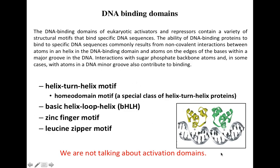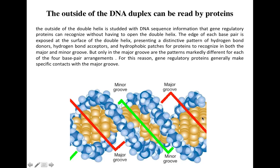Today we are going to talk about some general aspects of DNA binding domains. Looking at this slide, you can see a double helical structure of the DNA. The sugar-phosphate backbone is indicated in blue, and inside you can see the nucleotides. This is the minor groove and this is the major groove of the DNA. Regulatory proteins generally interact with the nucleotides in the major groove, though they can also make additional bonds with the sugar-phosphate backbone or nucleotides in the minor groove.